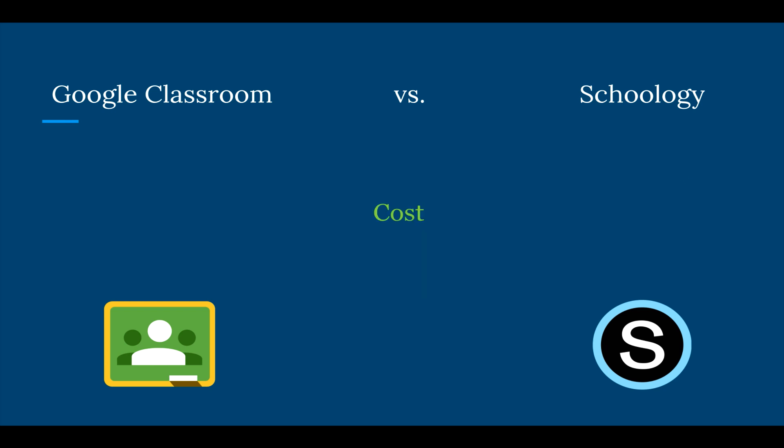Next we'll look at the cost. The winner in this area will be Google Classroom. Google Classroom is free — there's no cost associated with any of its features. The school district does need to be registered with Google Apps for Education, but other than that everything in the program is free. Schoology does offer a free option for the basic account for students, teachers, or parents, but in order to get access to the full array of features, the school district must request a quote through a vendor.